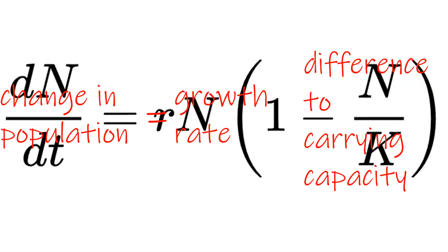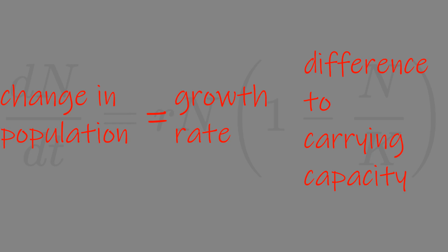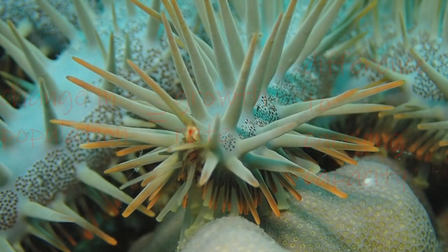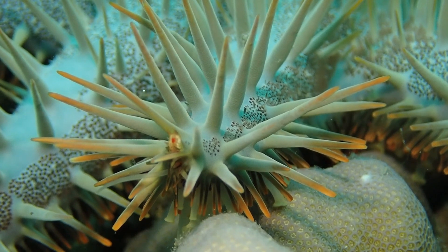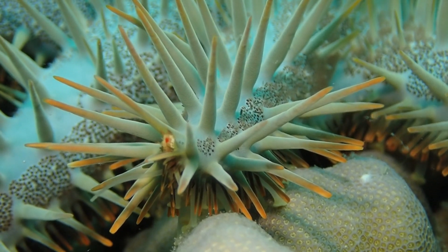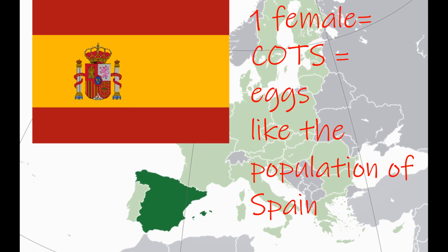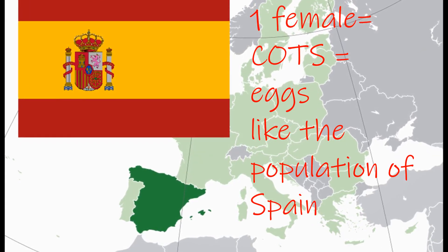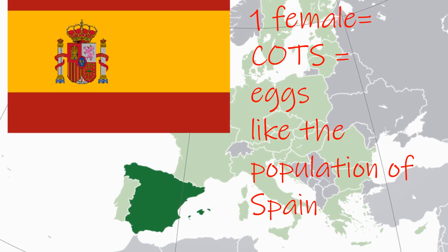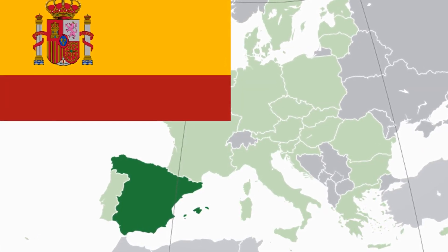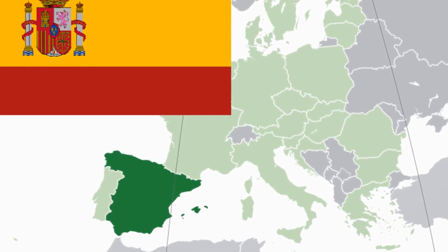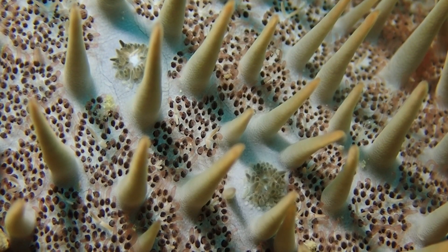Here we have the equation for population growth. To simplify: a change in population equals growth rate multiplied by the difference to the carrying capacity. Some animals like humans live by having few offspring and maximizing investment in them. Other animals like the crown of thorns starfish produce the maximum number of eggs — a single large female can produce 50 million eggs, equivalent to the entire human population of Spain. That's how incredibly fast these animals reproduce.